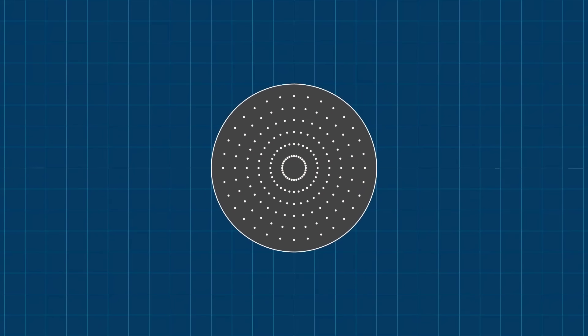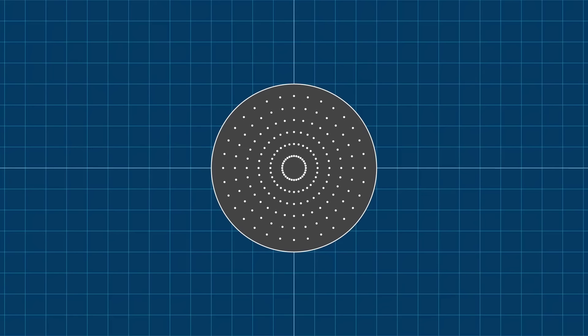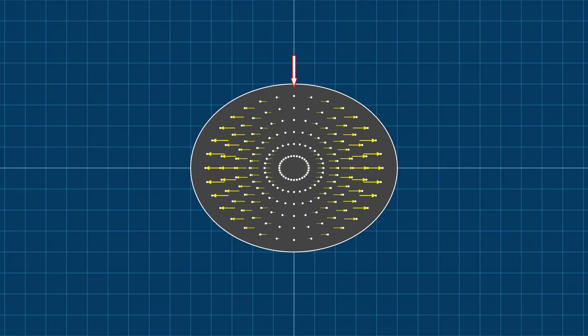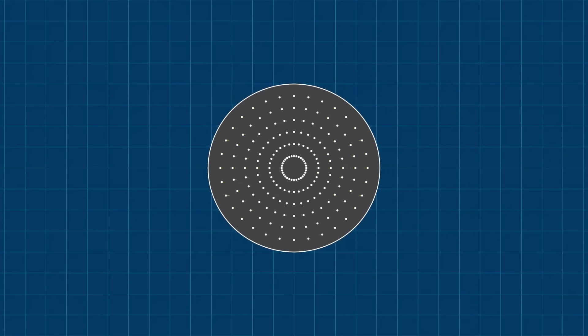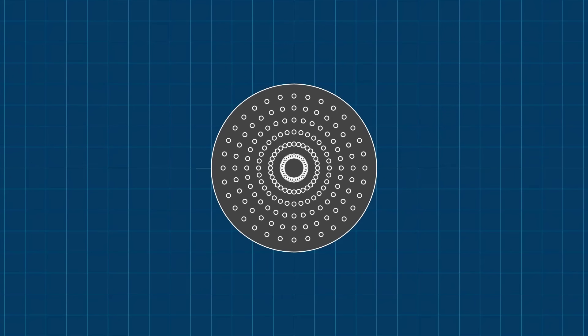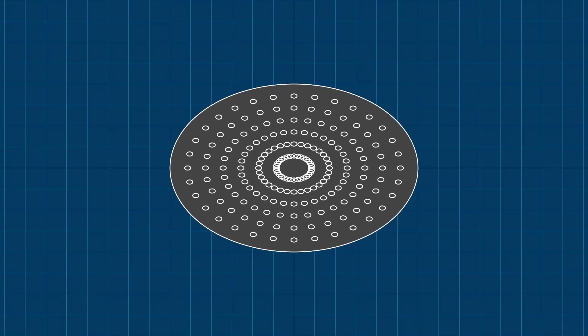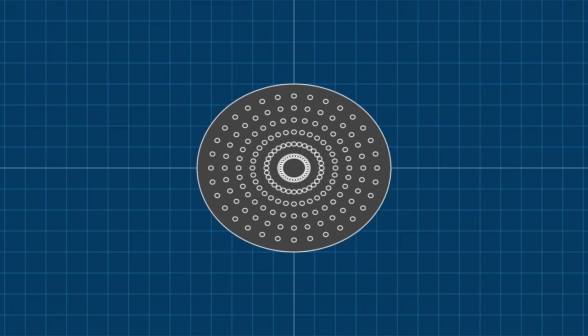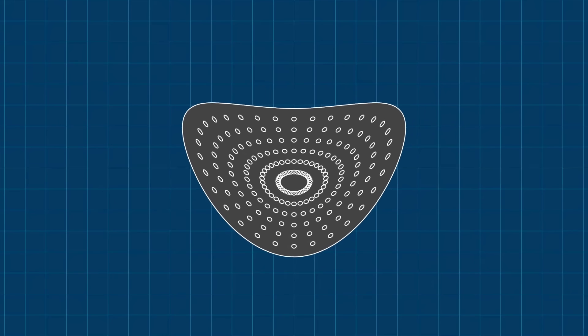But the displacement vectors cannot really tell us how the object is deforming at each point. Take this deformation as an example. Some of the points are not moving at all. At these points the displacement is zero, although the object is clearly deforming. This means that the displacement doesn't provide information about the local deformation of the object. So what we can do instead is to draw a bunch of small circles on the object and track their deformation over time. In this way we can see the local deformation at each point, even if the points themselves are not moving.